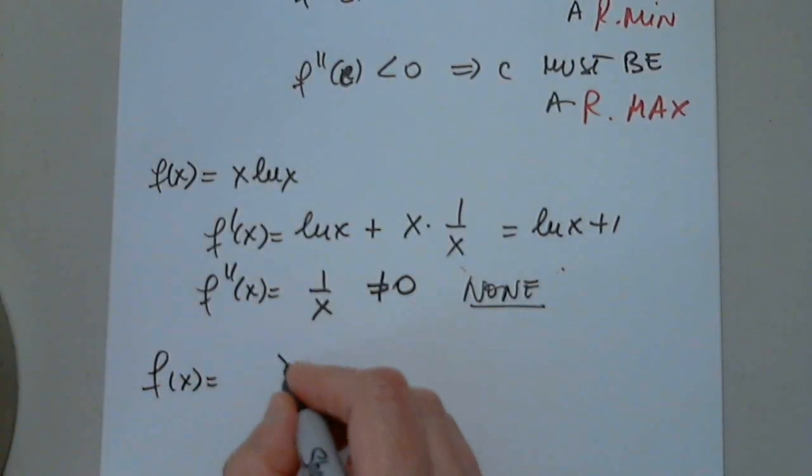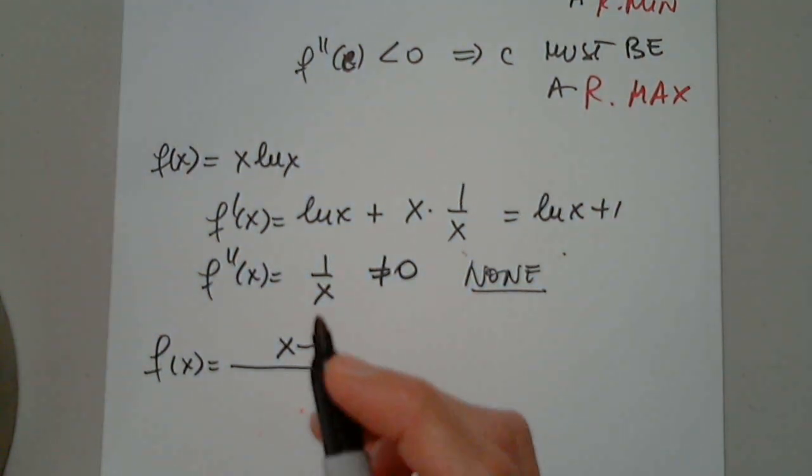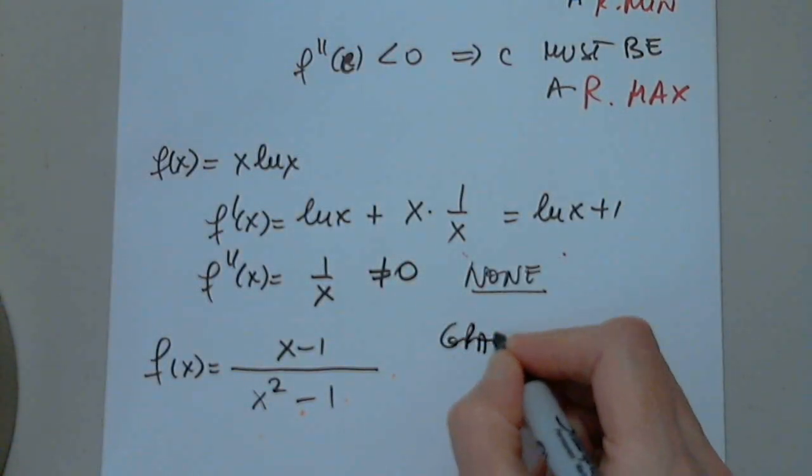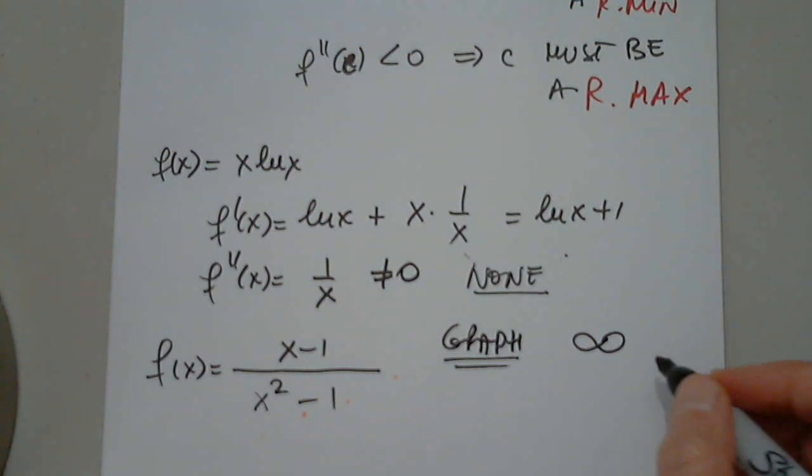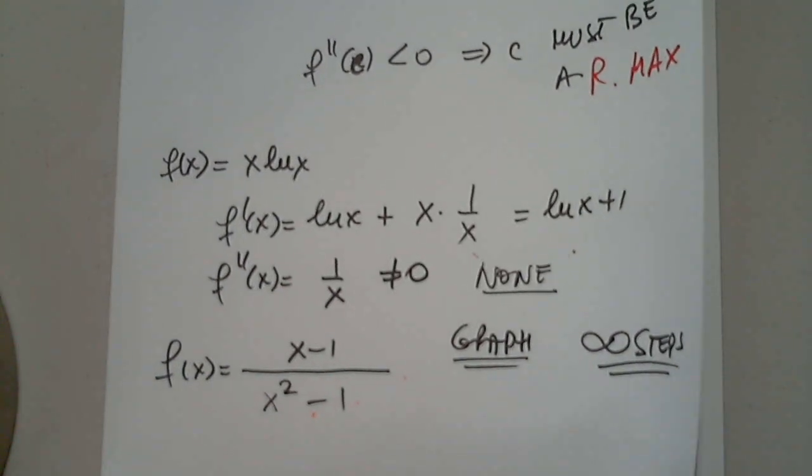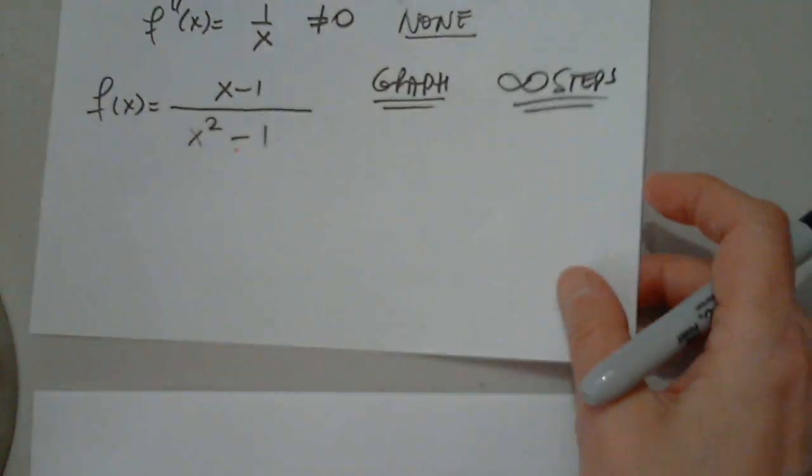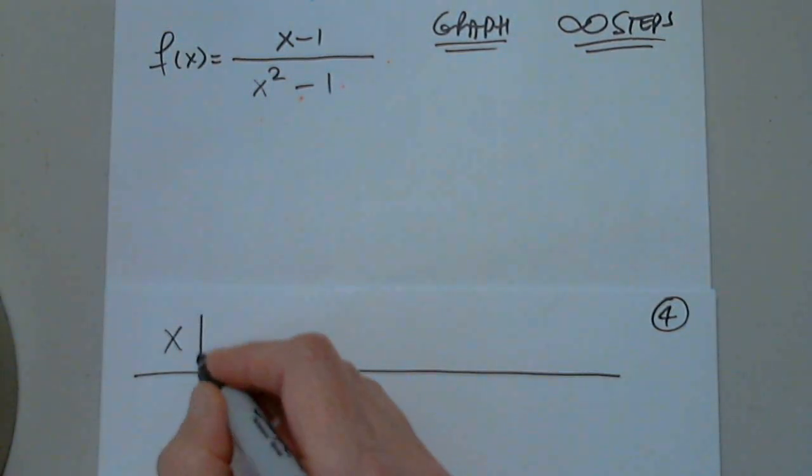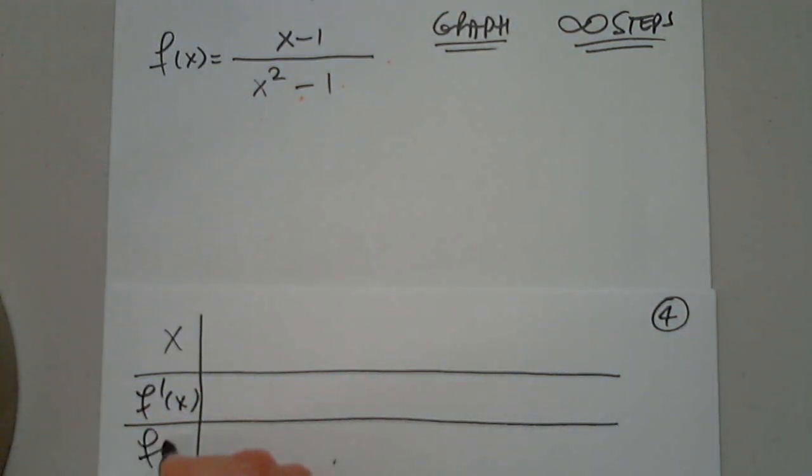So here's one function: x minus 1 divided by x squared minus 1. So we're asked to do everything and graph. Go through those infinite number of steps, show everything, and eventually graph the function. I don't have enough room here, so I'm going to start the table right away.